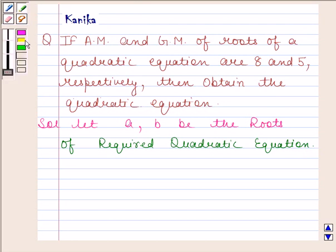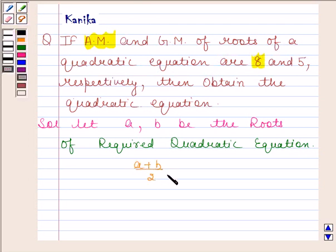In the question it is given that arithmetic mean of roots of a quadratic equation is 8. That means A plus B by 2 is equal to 8, and this implies A plus B is equal to 16.